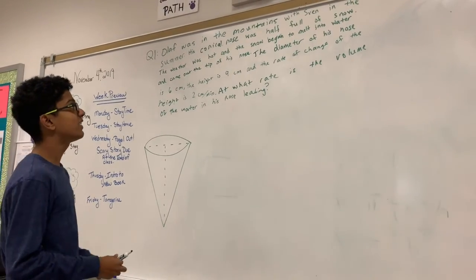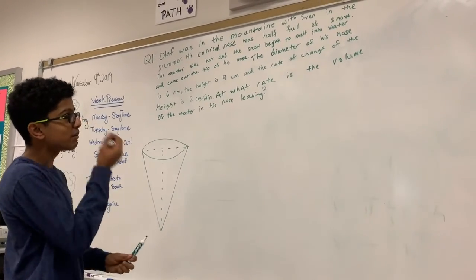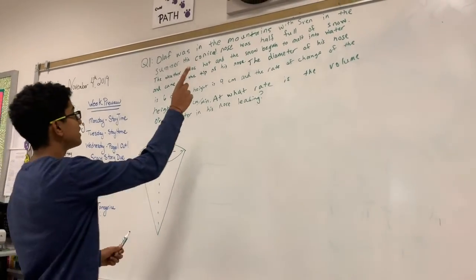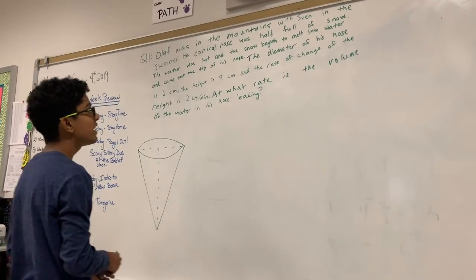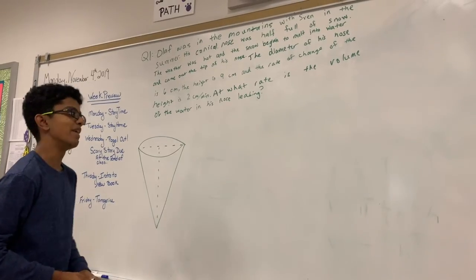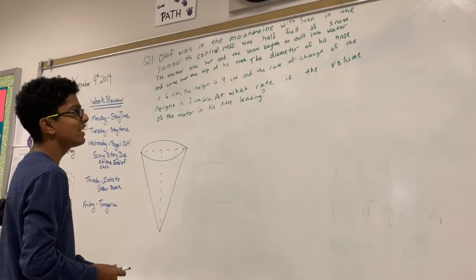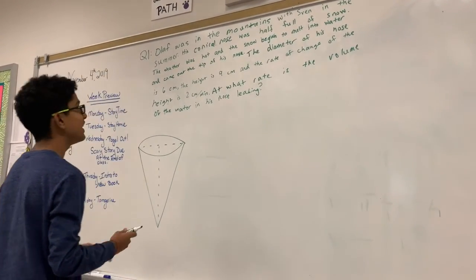The weather was very hot, so snow began to melt into water and come out the tip of the nose. The diameter of his nose is 6 centimeters, height is 9 centimeters, and rate of change of height is 2 centimeters per minute. So at what rate is the volume of the water in the nose leaking?